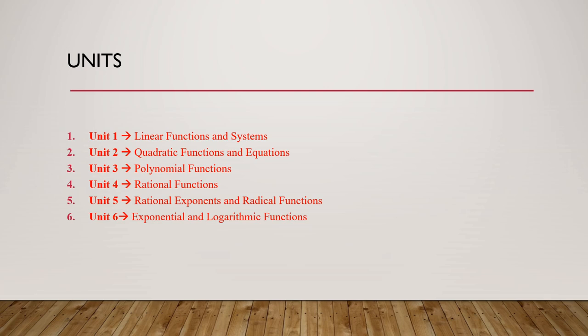After that, we are going to move to polynomial functions. Polynomial functions have the form p(x) equals aₙxⁿ plus aₙ₋₁xⁿ⁻¹ plus aₙ₋₂xⁿ⁻² plus ... plus a₁x plus a₀, where n is the degree of the polynomial function. For example, if n equals 2, the polynomial function is called the quadratic function; if n equals 1, it is called the linear function. The values aₙ, aₙ₋₁, down to a₀ are called the coefficients of the terms, and x is the variable.